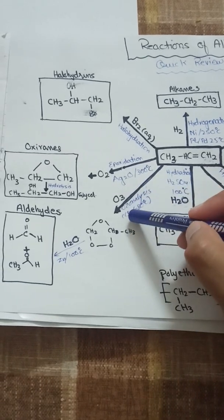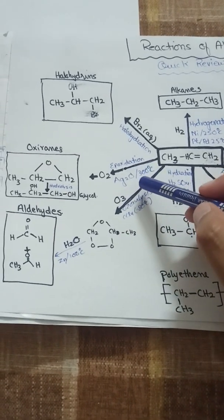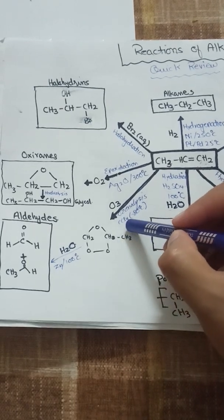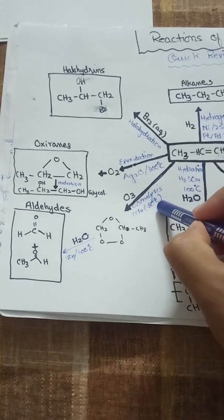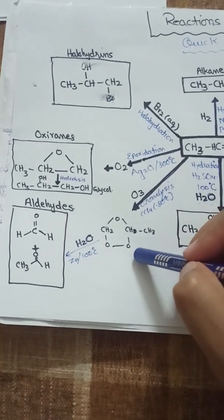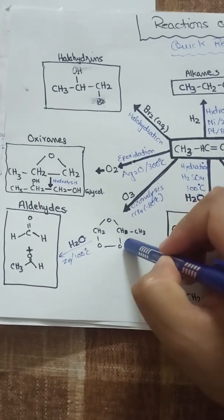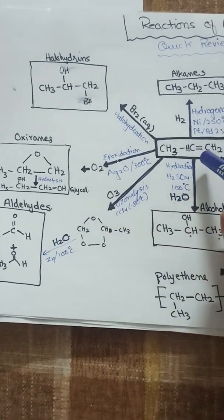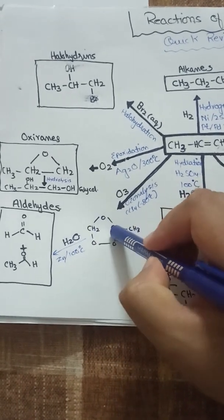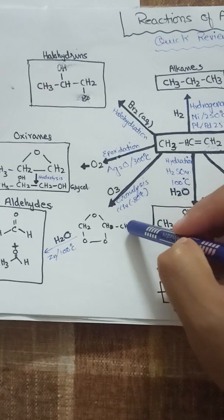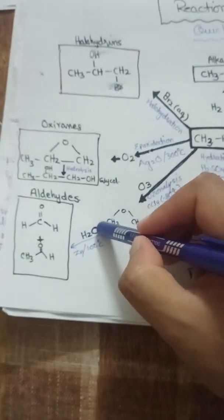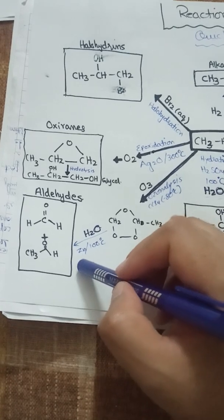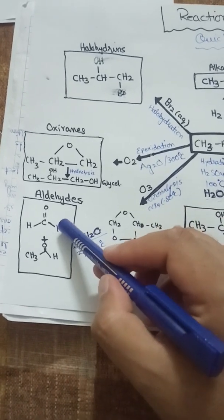The next reaction is ozonolysis, which is the addition of ozone (O₃). This reaction occurs in the presence of an inert solvent, carbon tetrachloride, at −80°C. We get an intermediate product called ozonide — here, propylene ozonide — in which the double bond between the two carbon atoms is broken down. Upon hydrolysis with water in the presence of zinc at 100°C, we get aldehydes.